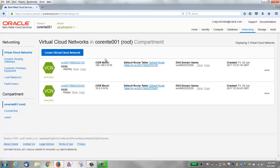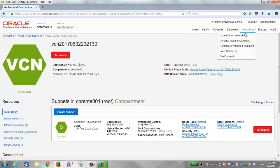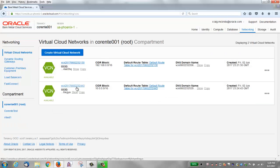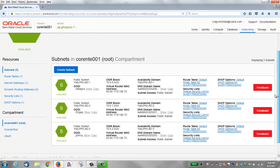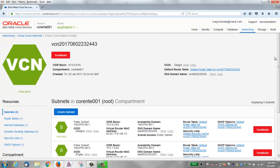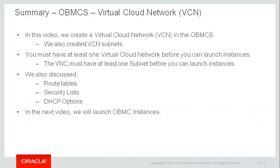We're all set. We've got two VCNs, each with subnets, the security rules are set up, and the gateways are set up. We are ready to launch instances using either one of these virtual cloud networks. To summarize: in this video we created a virtual cloud network in Oracle Bare Metal Cloud Service, created VCN subnets, learned that you must have at least one VCN with at least one subnet before you can launch instances, learned about route tables and added an internet gateway rule, learned about security lists, and learned about DHCP options. In the next video, now that we have our virtual cloud network set up, we'll launch an Oracle Bare Metal Cloud instance.